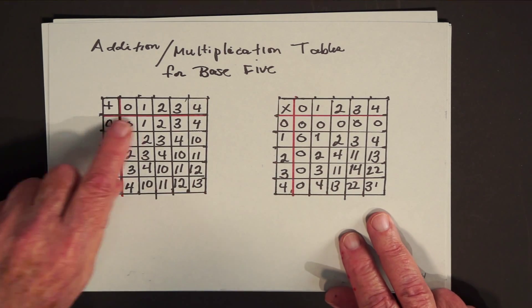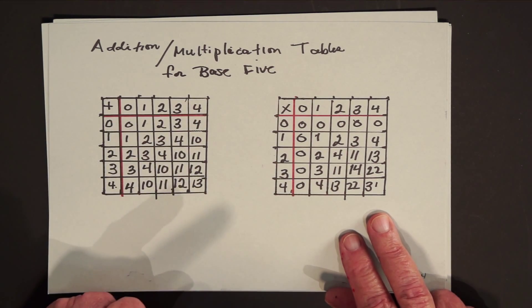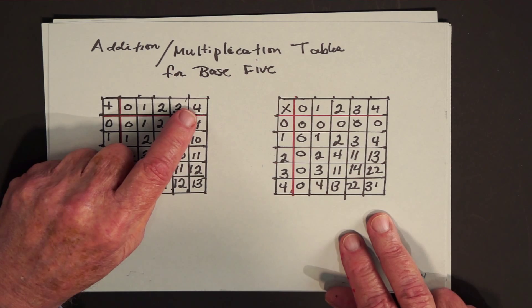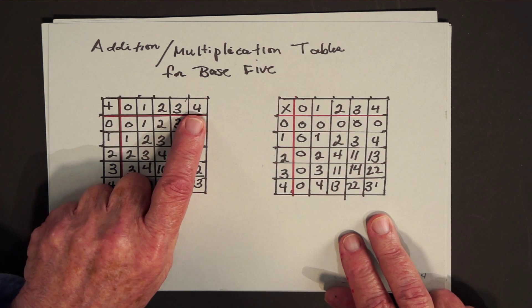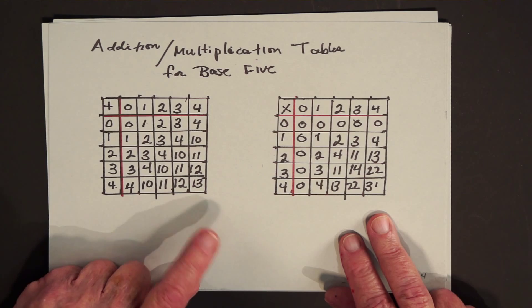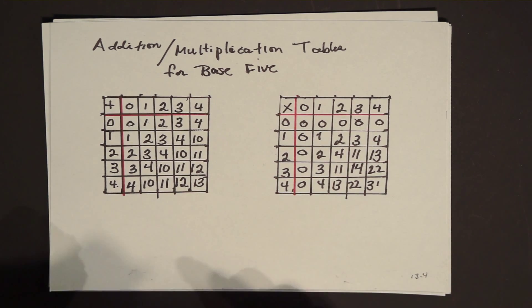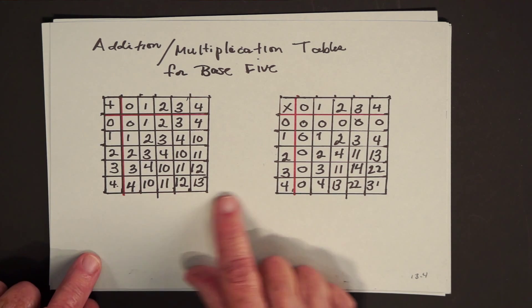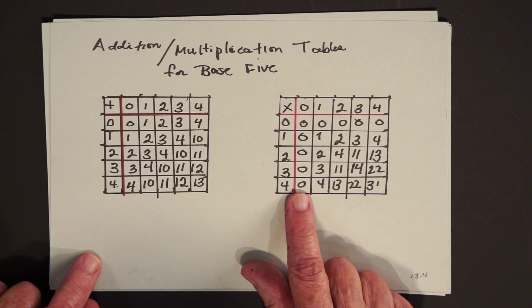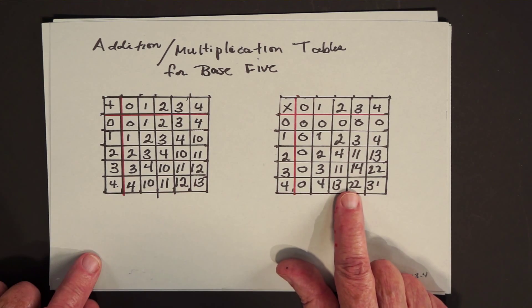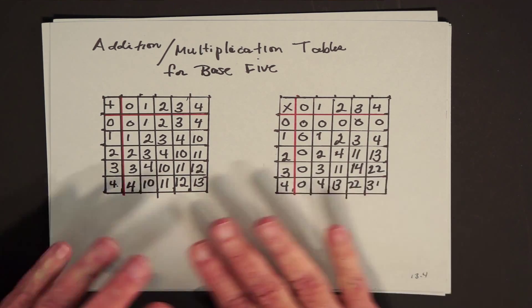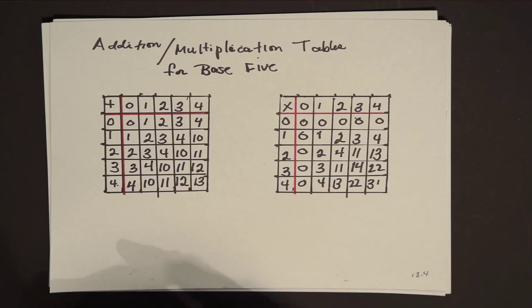And again, these are the tables. Nothing very tricky about that. Notice a few things that happened. Remember in base ten, what was the greatest single digit you saw? A nine. And what was the interesting thing about nine? A number is divisible by nine if and only if the sum of its digits are divisible by nine. What's the greatest single digit in base five? It's a four. So a number is divisible by four if and only if the sum of its digits is divisible by four.